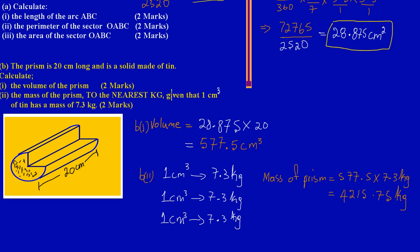In answering the question, the mass of the prism is 4,215.75 kilograms. But if you notice, they asked us to calculate it to the nearest kilogram.